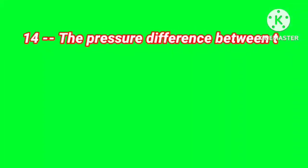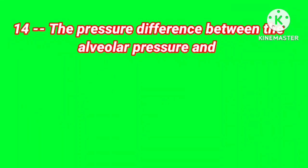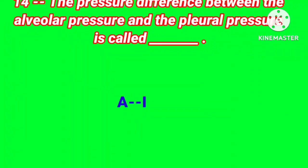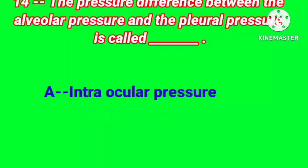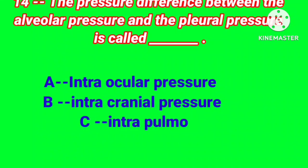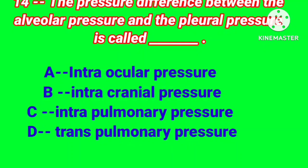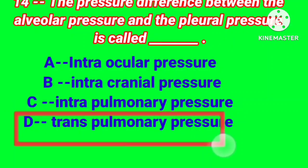Question number 14: The pressure difference between the alveolar pressure and the pleural pressure is called? Option A: intraocular pressure, B: intracranial pressure, C: intrapulmonary pressure, D: transpulmonary pressure. Correct answer is option D.